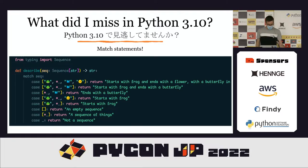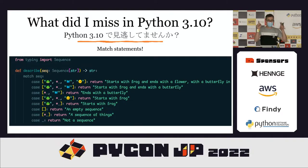In this example, you can match a list where it starts with a frog and ends with a flower, with a butterfly in the middle. Or where it starts with a frog and ends with a butterfly. Towards the bottom, it matches an empty sequence. I've used square brackets, but the sequence could also be a tuple — because it's not a switch statement. And you can use underscore to say it's not a sequence at all.